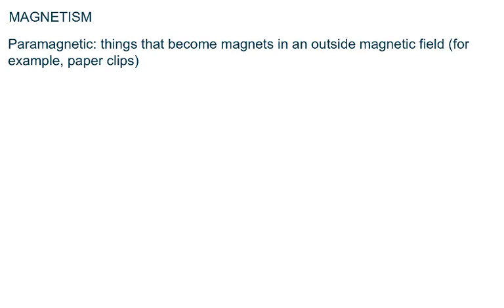An outside magnetic field just means bringing a magnet nearby — it could be a permanent magnet or an electromagnet. There are some things you can pick up with a magnet that are not normally permanent magnets themselves. An example is a paper clip — that's paramagnetic. A penny, on the other hand, is not paramagnetic; you're not going to pick up a penny with a magnet.